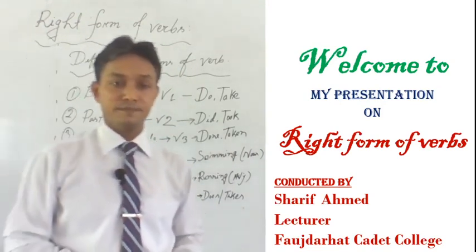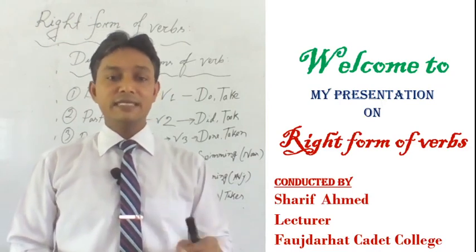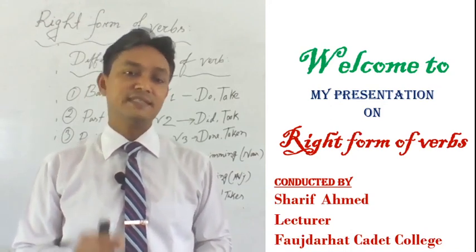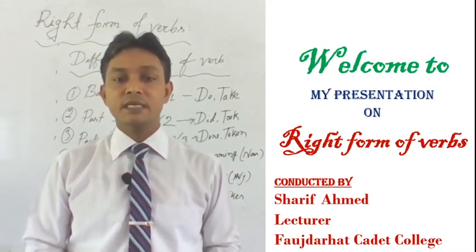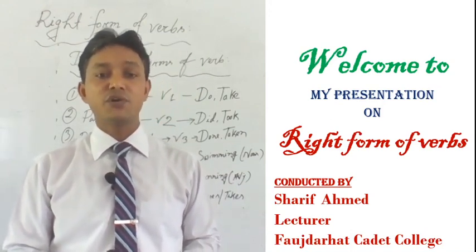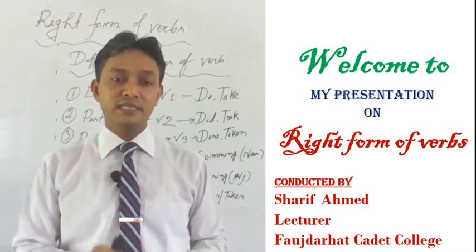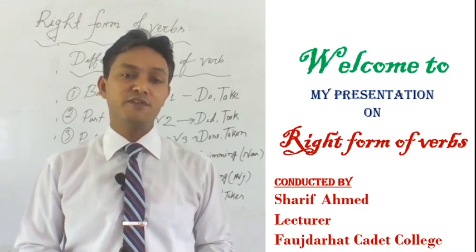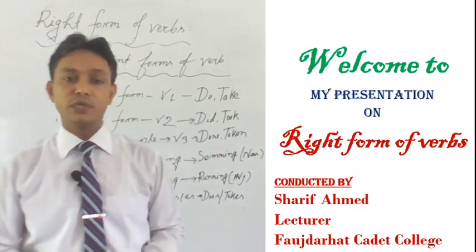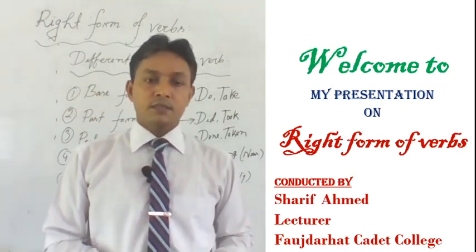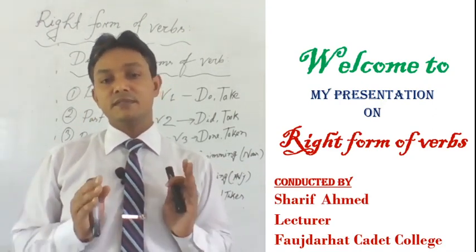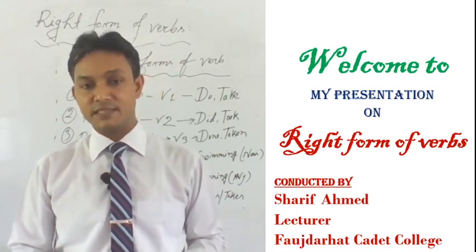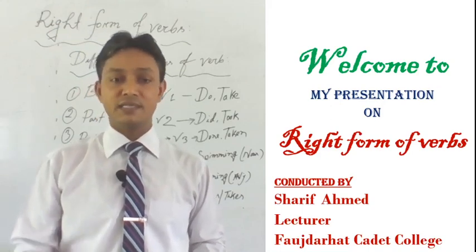Number five: participle. Again, if we add ING with the base form of the verb and that performs the function of an adjective in a sentence, we call it a participle — like 'the boy got down from a running train'. Here the word 'running' is used before the word 'train' to modify the word 'train', and the word 'running' is performing the function of an adjective. That's why we call it a participle. Now there are certain rules we need to know to identify the correct form of the verb in a sentence, and we are going to discuss those rules in detail in our next slides.